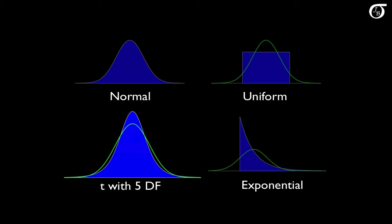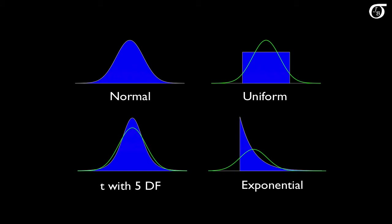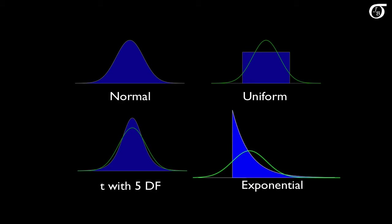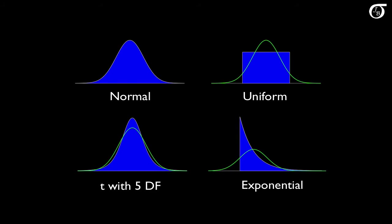Another distribution we'll be sampling from is the t distribution with 5 degrees of freedom. Compared to a normal distribution with the same variance, it has a sharper peak and heavier tails. We'll also be sampling from the exponential distribution. Note that for any distribution, the expectation of the sample variance — with n-1 in the denominator — is equal to the population variance sigma squared. On average, the sample variance equals the population variance, even when the inference procedures are working poorly.